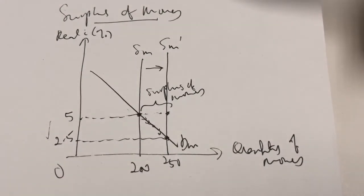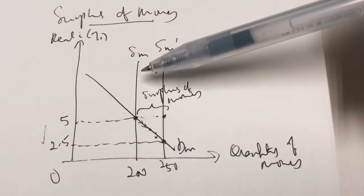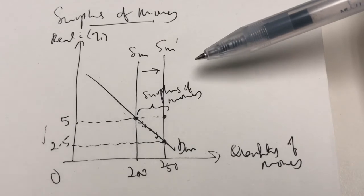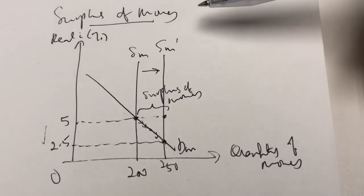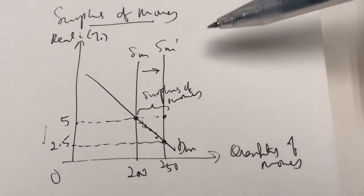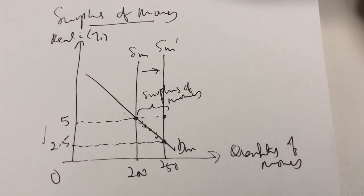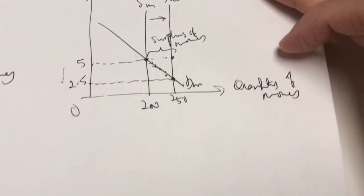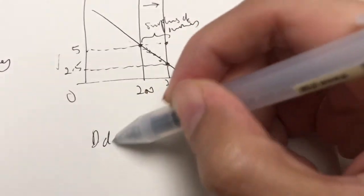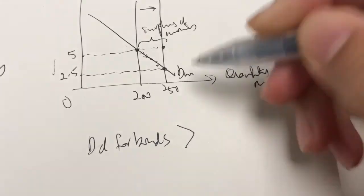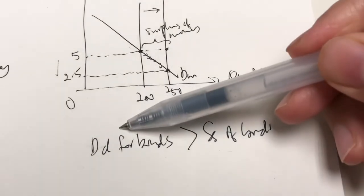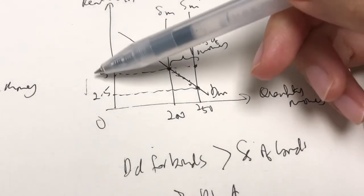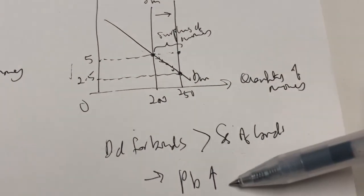Suppose the supply of money increases — the supply curve shifts to the right, creating a surplus of money. People have additional money and will buy more bonds, based on our assumption that people either hold money or bonds. In the bond market, the demand for bonds will be relatively more than the supply of bonds. When there's more demand than supply, the price of bonds will increase. So when the interest rate or the price of money falls, it will lead to an increase in the price of bonds.